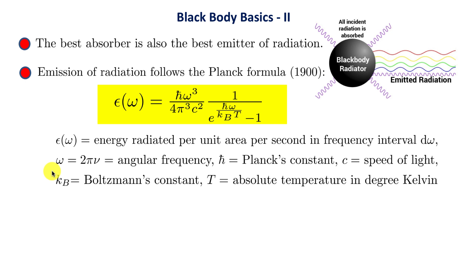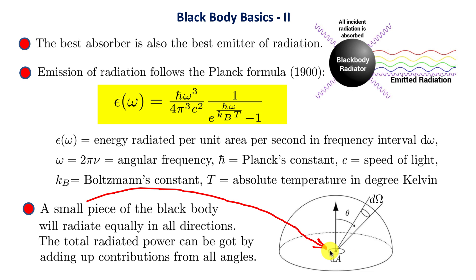You may have seen the symbol nu, the number of cycles per second; multiply it by 2 pi and you get the angular frequency omega. H-bar is Planck's constant, c is the speed of light — 3 times 10 to the 8 meters per second — k_B is Boltzmann's constant, and T is the absolute temperature in degrees Kelvin. A small area dA on the black body makes an angle theta with the normal to the surface, and the small solid angle subtended is called d-Omega. This small piece radiates equally in all directions, so to get the total radiated power you integrate over all solid angles.